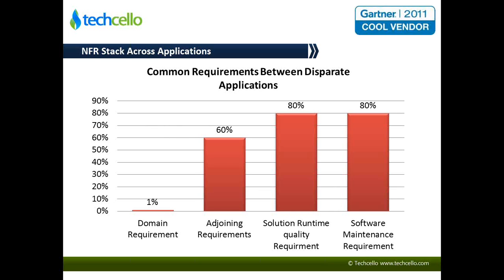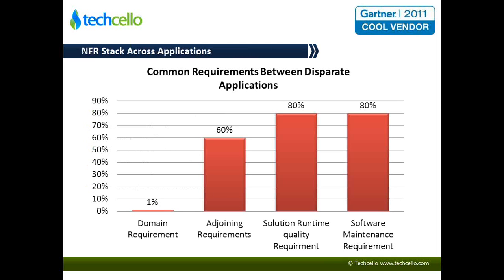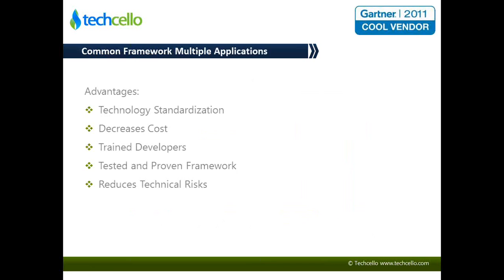We also saw this slide in the initial first session — the commonality of requirements between disparate applications. The domain requirement is of course going to be different, but other than that, the adjoining requirements — user management, security access control, and runtime quality requirements like performance, response time, and maintainability — show a huge percentage of overlap between requirements from one product to another. What we are trying to do from a framework perspective is to package or bundle these three together so that all applications and products can leverage and reuse these requirements.